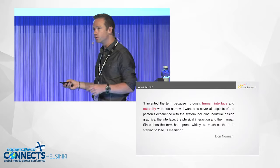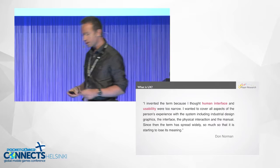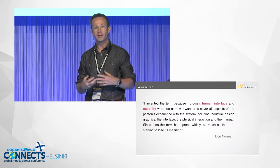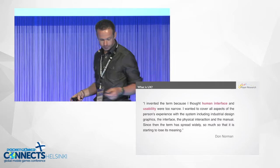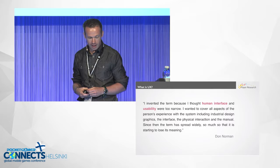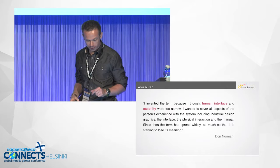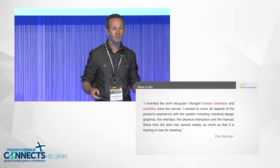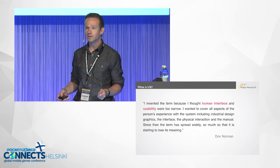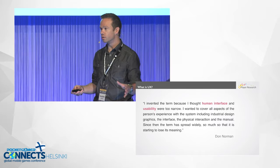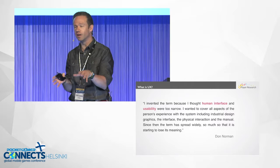UX is somehow linked to usability. Don Norman is one half of the Nielsen Norman group — Don Norman, a psychologist, and Jakob Nielsen, a Danish computer scientist. Together they formed a group that does usability and user experience. His definition: 'I invented the term because I thought human interface and usability were too narrow — I wanted to cover all aspects of the person's experience with the system.' But since then the term has spread widely, so much so that it's starting to lose its meaning. People say 'I do UX' but they're probably not doing what he was talking about.